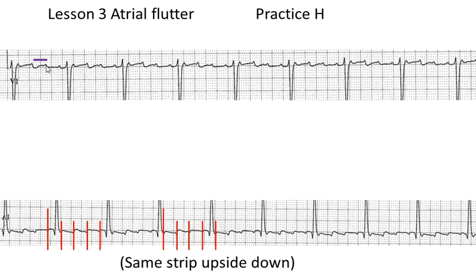That would give us a rate of close to 250 beats per minute, which is absolutely impossible for a P wave to go through the AV node that fast.